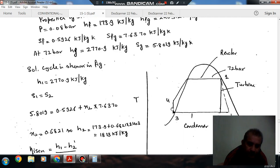This is your steam cycle. This is the isentropic process in turbine, this is the actual process in turbine, one to two dash. This is the condenser, this is the reactor. At state one, the pressure is 72 bar and the steam is dry and saturated.